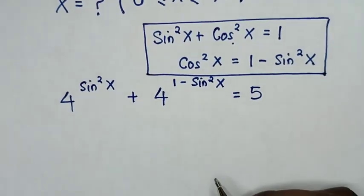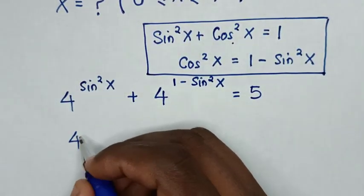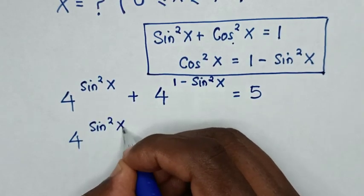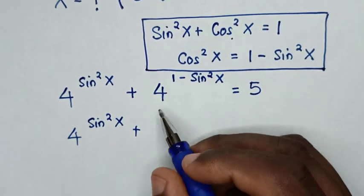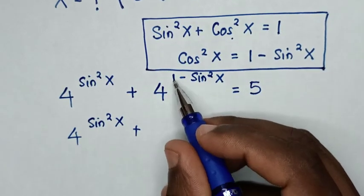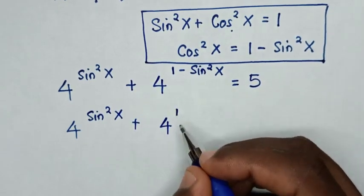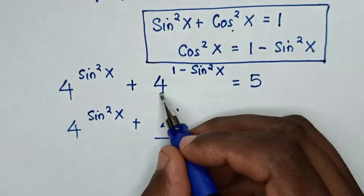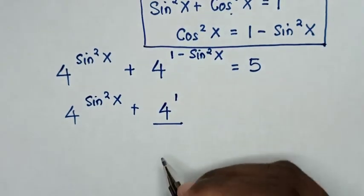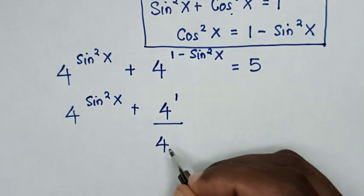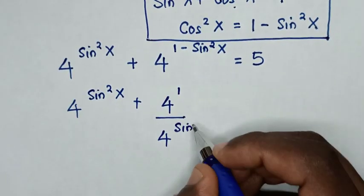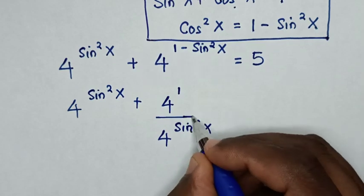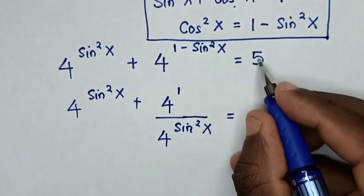In the next step, it will be 4 power of sine square x, plus 4 power of 1 over 4 power of sine square x, is equal to 5.